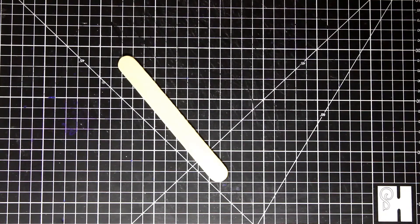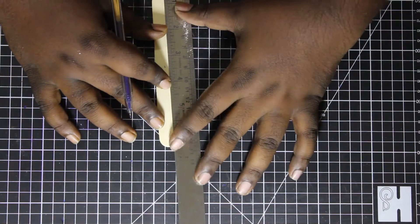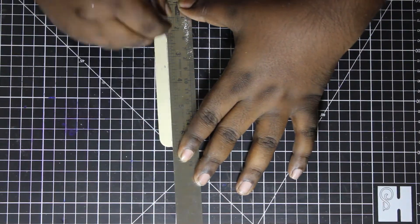Hello everyone. Today I am going to make a mini katana from popsicle stick. First draw the outline of the sword on the stick.